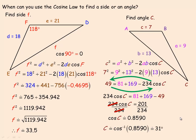To recap: to use the cosine law to find a side, you need to know the other two sides and the angle between them. To use the cosine law to find an angle, you need to know all of the sides. Then you can use it to find any angle — I could have just as easily found angle B or angle A by writing another version of the cosine law.